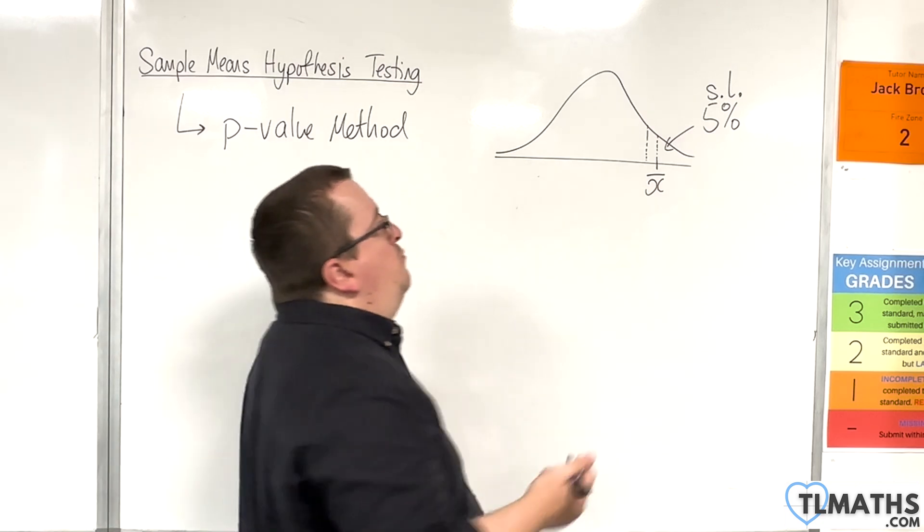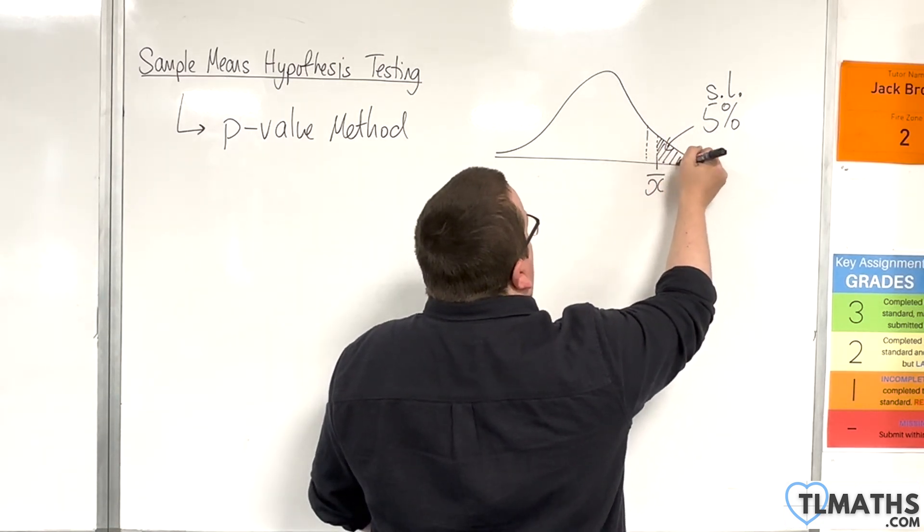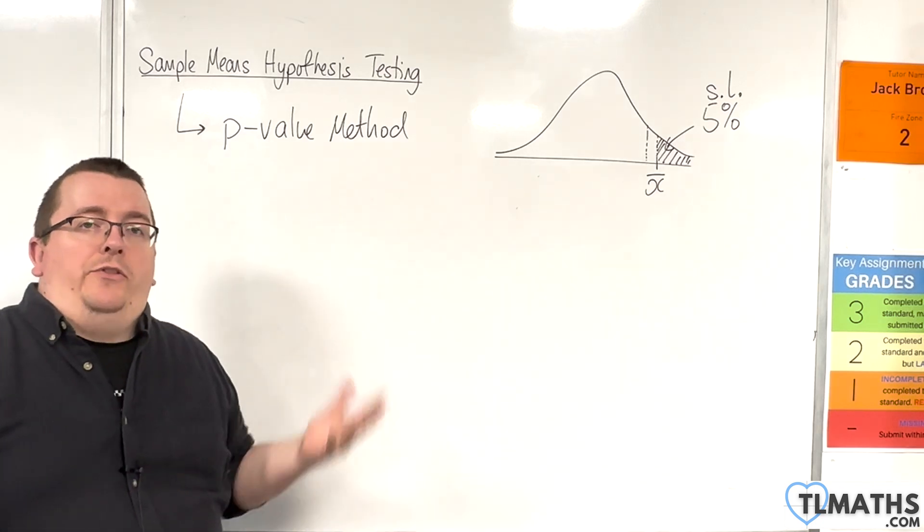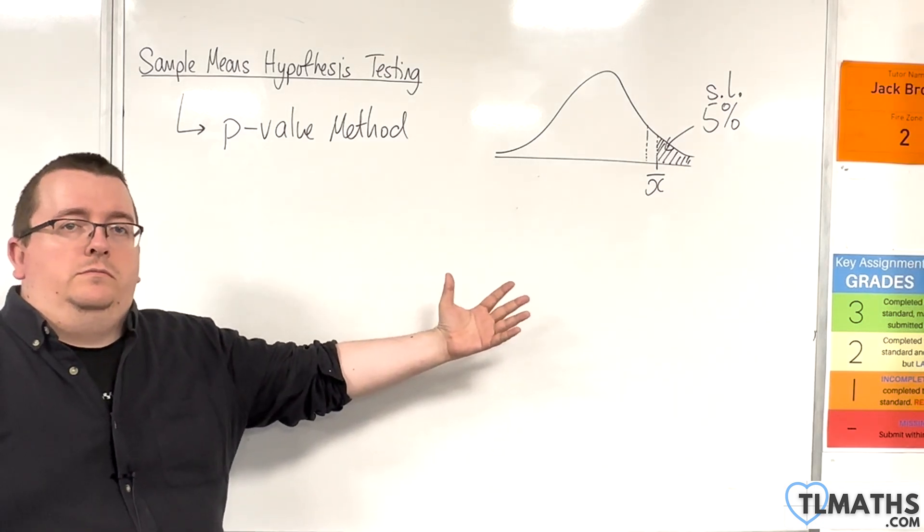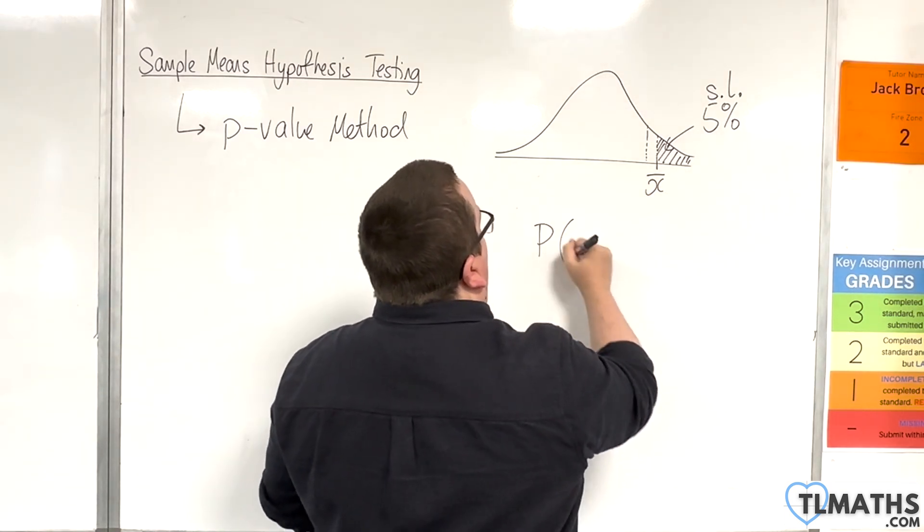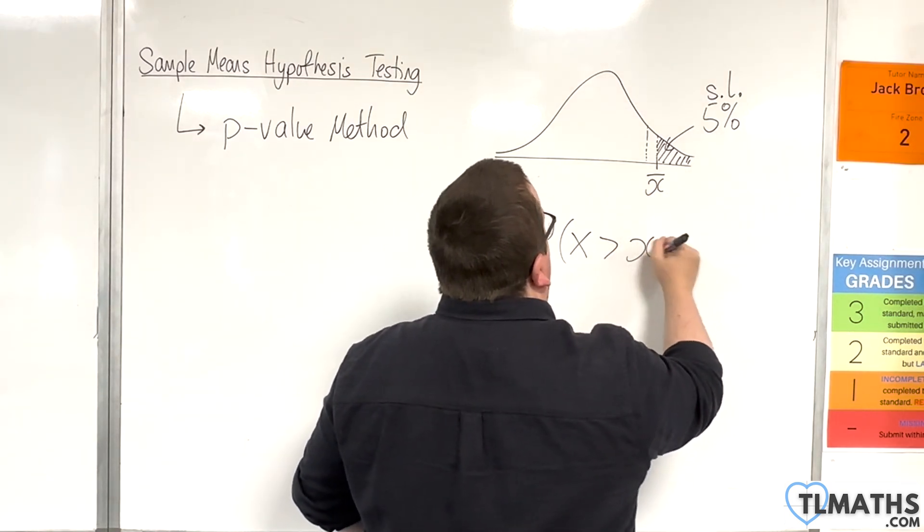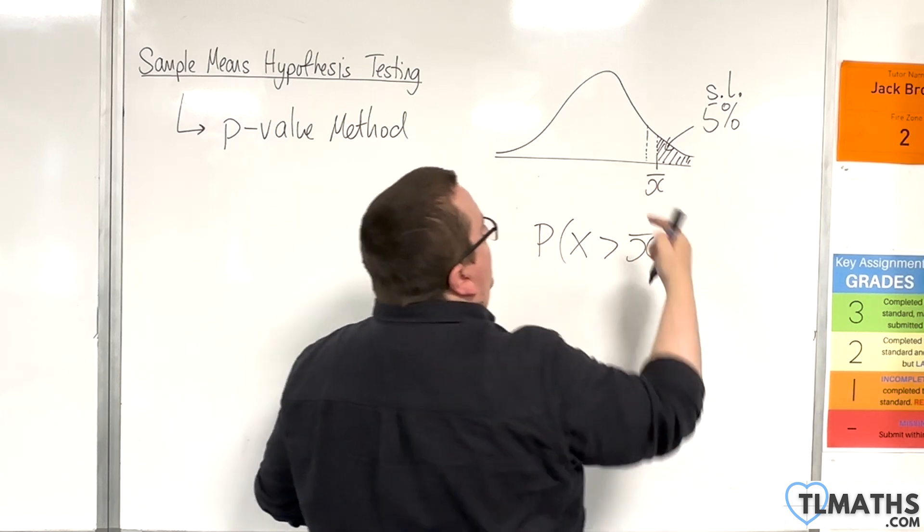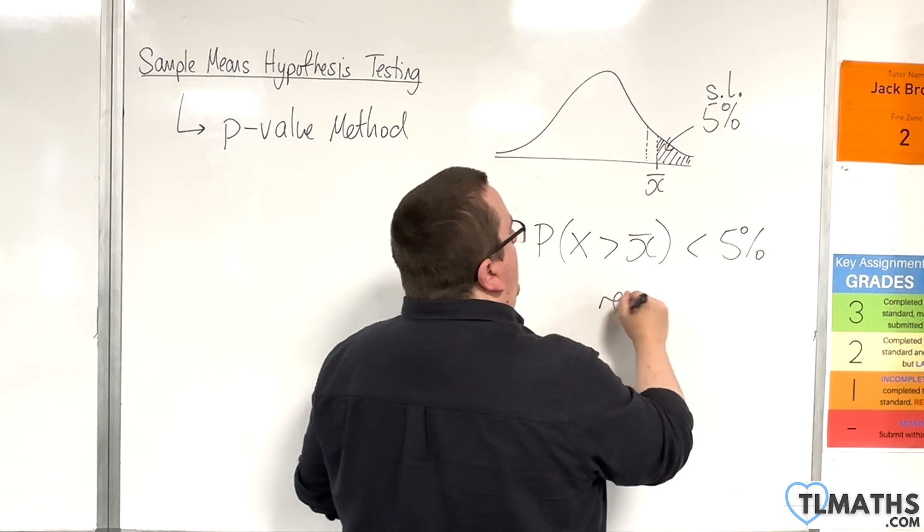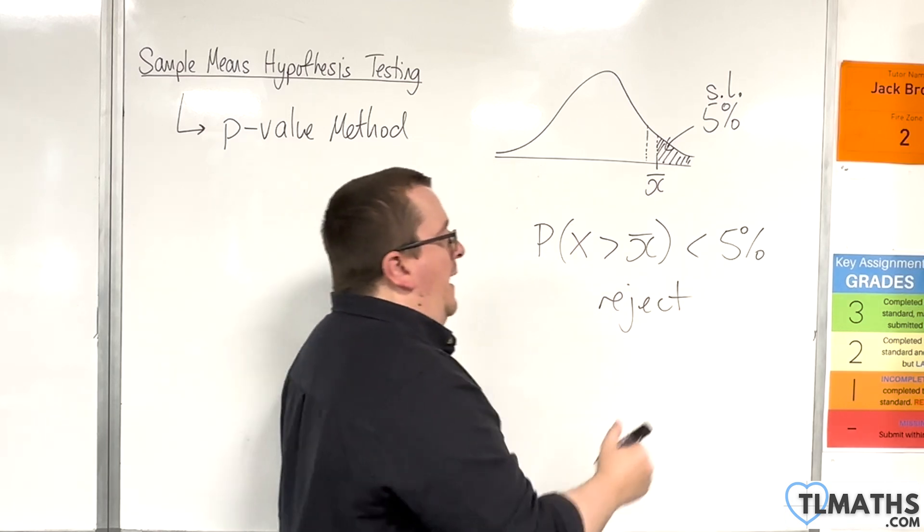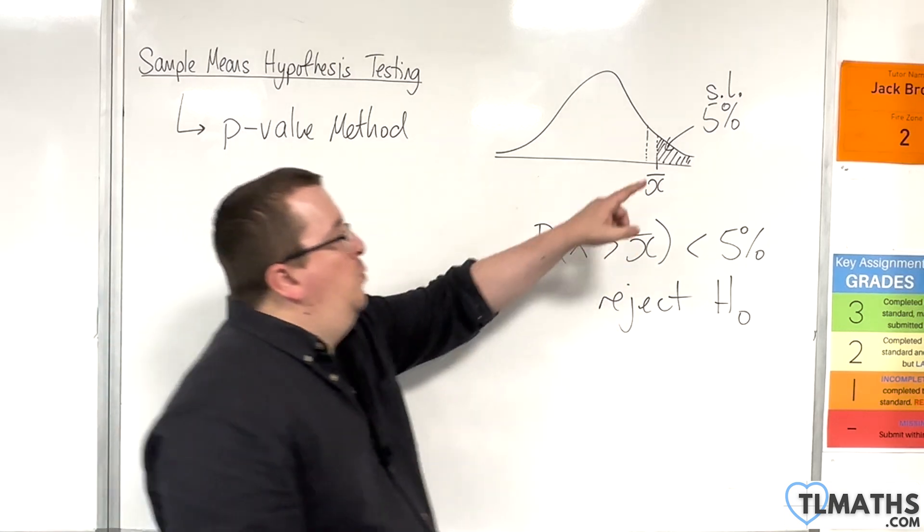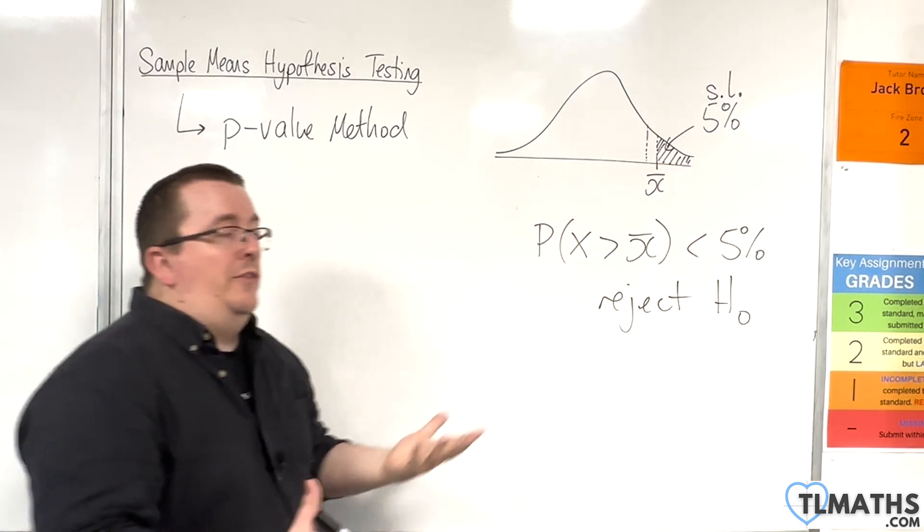And you work out its probability, and you go, well, its probability is this. And you go, well, actually, that's less than the significance level. So, the very nature of the fact that the probability of x being greater than x-bar, because that probability here is less than 5%, we are going to reject the null hypothesis. So, we're going to reject H0, because it's within this region. It's less than the significance level.